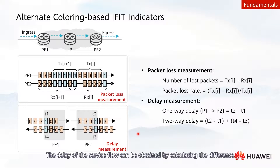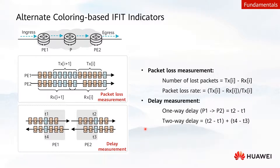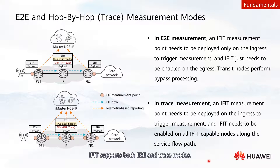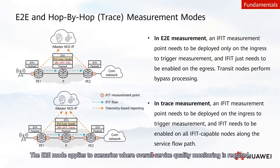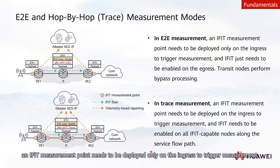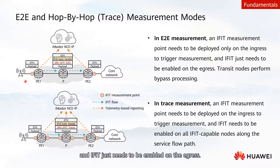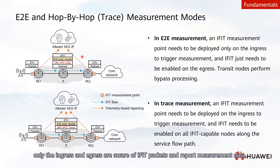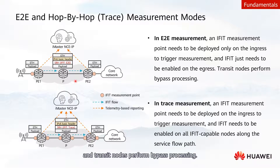The delay of this service flow can be obtained by calculating the difference between the timestamps of ingress and egress. iFIT supports both E2E and hop-by-hop modes. The E2E mode applies to scenarios where overall service quality monitoring is required, whereas the hop-by-hop mode applies to scenarios where fast fault locating is required. In E2E measurement, an iFIT measurement point needs to be deployed only on egress to trigger measurement, so only the ingress and egress are aware of iFIT packets and report measurement data, while transit nodes perform bypass processing.